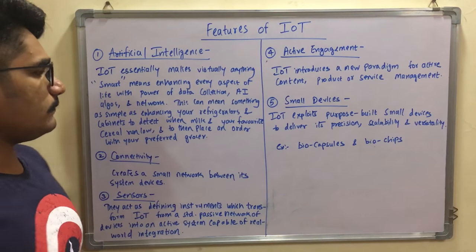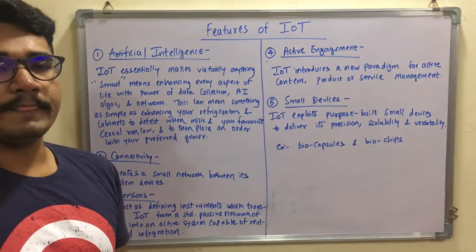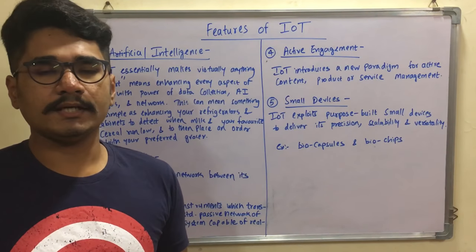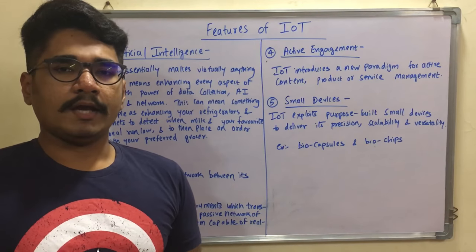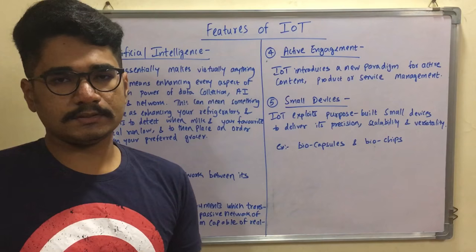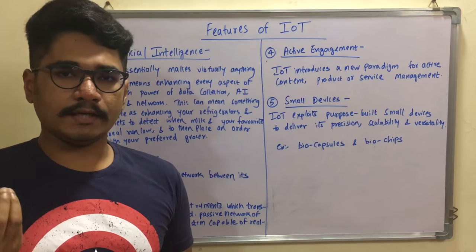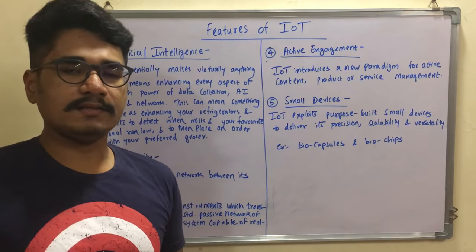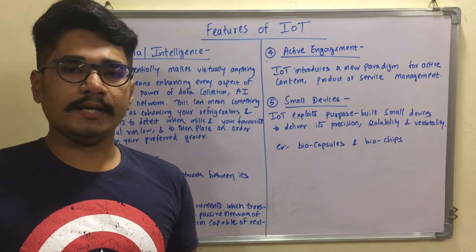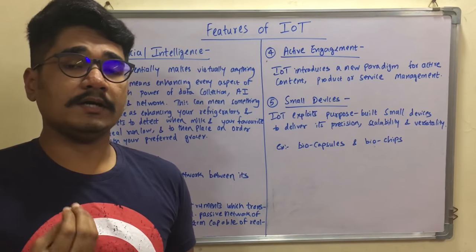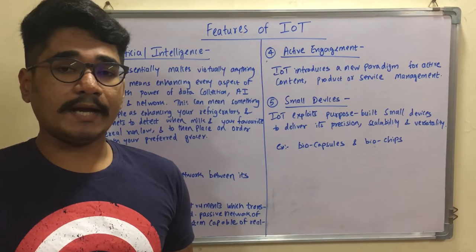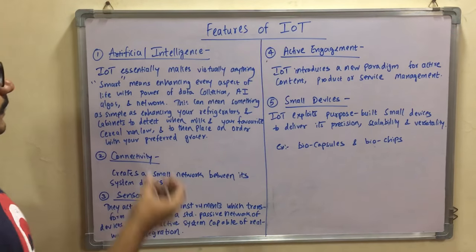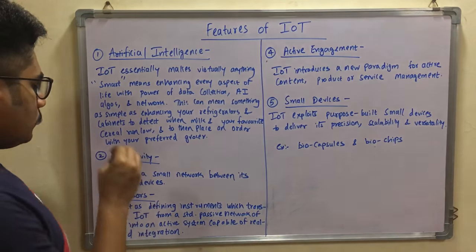A simple example: we have one refrigerator at home with different items — milk, eggs, veggies, fruits, meat, and so on. At a particular time of day, say the milk quantity is reduced and the owner is not aware that it's getting depleted. What IoT does is it has different sensors linked to the smartphone of the owner, and whenever an alert is triggered, the owner is notified that a particular item in the refrigerator is getting depleted or running out of stock. That's a basic example of artificial intelligence in IoT.